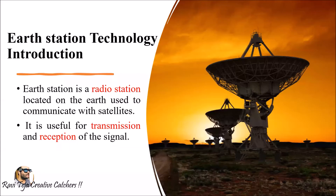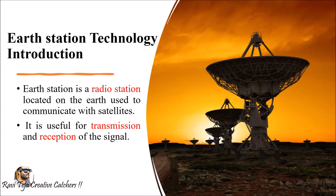Communication at an earth station involves two things: either transmission of signals from our earth station to the satellite, or reception of signals. For example, if you want to fetch some data from some part of the world, we take the help of a satellite. We send the request to a particular satellite nearer to our earth station, that satellite gathers the information from another part of the world, and again sends that signal back to our earth station.